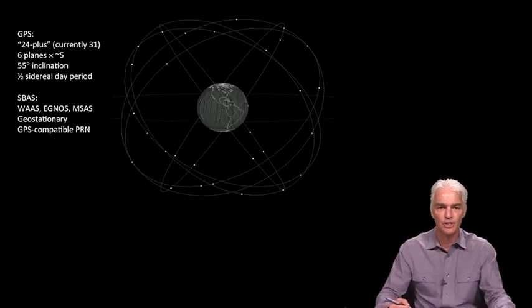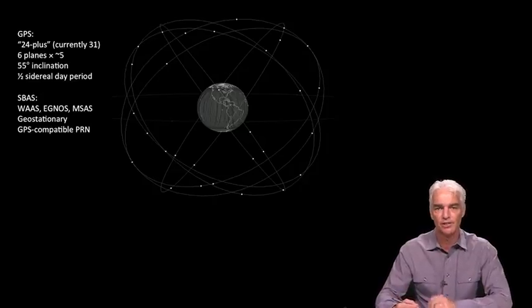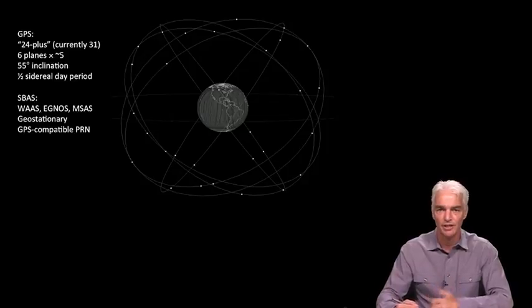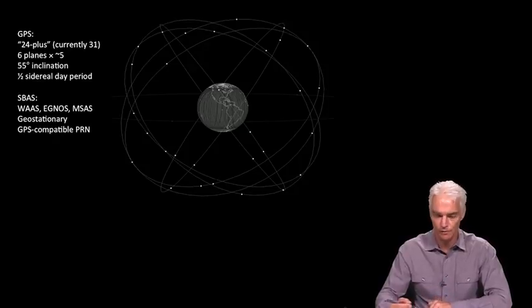And so finally, we just show the picture of all the GPS orbits and summarize them like this, and we'll show the same kind of picture for all the different constellations, and so you can get a good feel as we work through this module of how they are similar and different from each other.